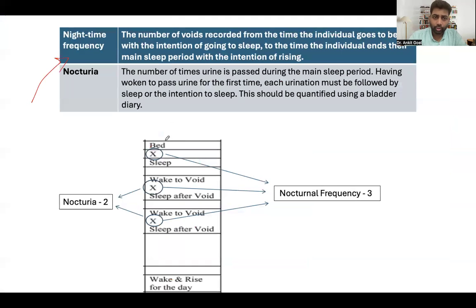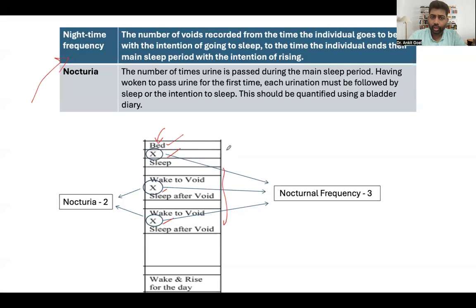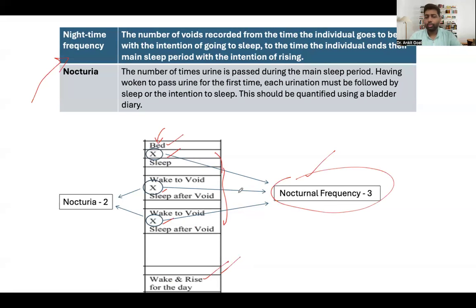For nighttime frequency: after the patient goes to bed with the intention to sleep, any time they wake up to void counts as nighttime frequency. For example, if the patient wakes up three times during the night, the nocturnal frequency is three. When the patient wakes up the next morning with the intention of getting up, you stop counting nocturnal frequencies.